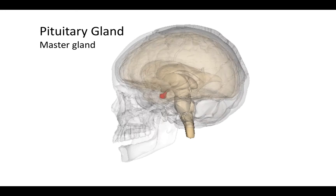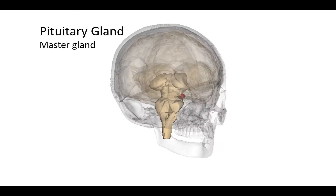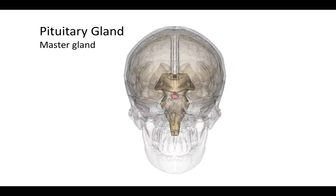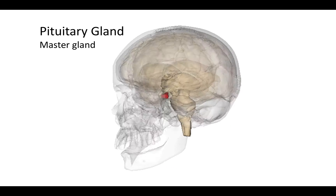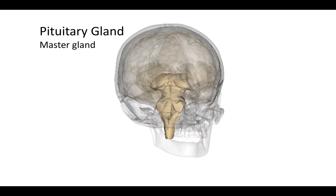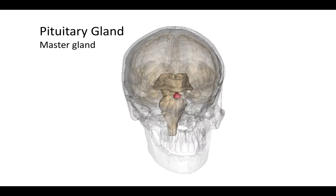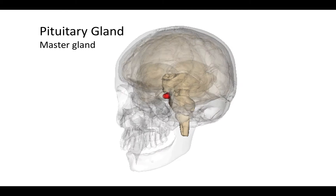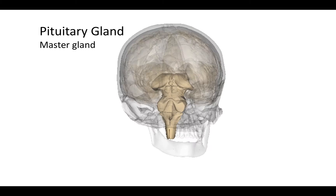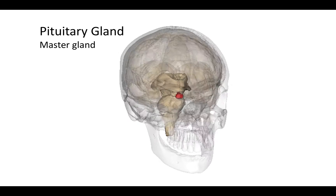The pituitary, shown here in red, is sometimes referred to as the master gland because it impacts a wide range of body tissues, and it also targets other glands within the body. It's connected to the base of the brain by a stalk, also referred to as the infundibulum.